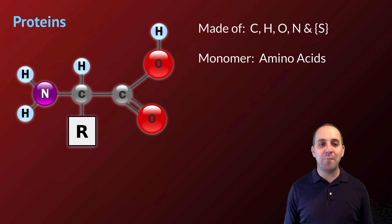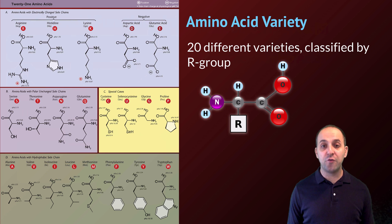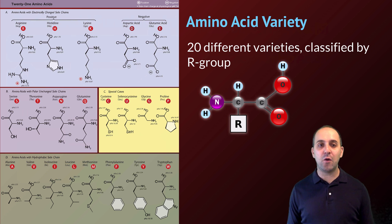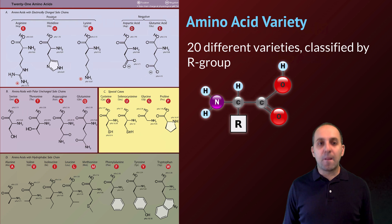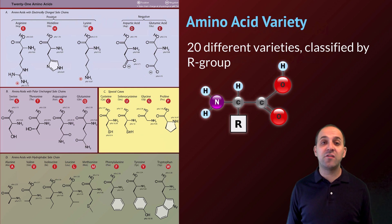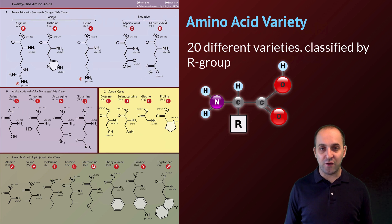Every amino acid has the same basic structure. The thing that differs between individual amino acids is the R group. This is a chart of the different types of amino acids that we see in biological systems — most systems use 20 different varieties. The R groups can vary quite a bit: they can be as simple as an individual hydrogen atom, or they can include large elaborate ring structures. Some have a positive charge, some a negative charge, some are totally hydrophobic, others are hydrophilic, and some — specifically cysteine and methionine — have incorporated sulfur into their structures.